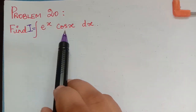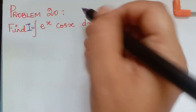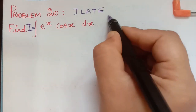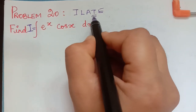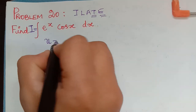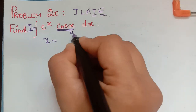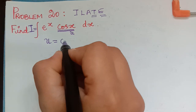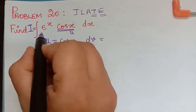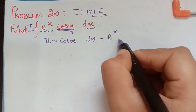We have to make the choice of the function u and the function dv using the ILATE rule. As per ILATE, the trigonometric function comes before the exponential function. So the choice of u must be the trigonometric function cos x, and dv must be the remaining part, that is e^x dx.